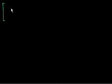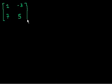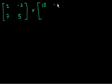So let me think of two matrices. I'll do two by two matrices, and let's multiply them. So let me pick some random numbers: 2, minus 3, 7, and 5. And I'm going to multiply that matrix, or that table of numbers, times 10, minus 8, 12, and then minus 2.